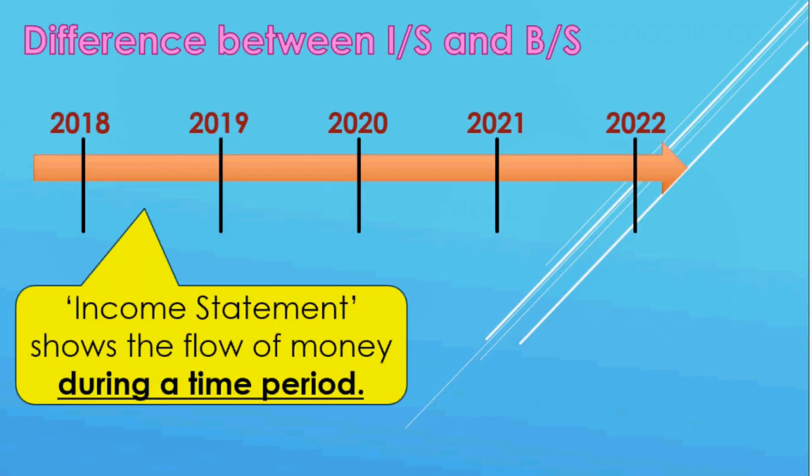An income statement shows the flow of money in and out during a time period, such as a year or a month. However, you cannot see the bottom-line financial situation with an income statement. Looking at only an income statement would be missing the forest for the trees.